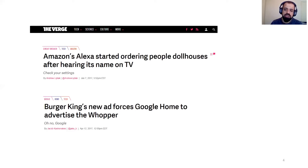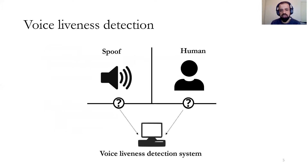Voice liveness detection is a system or AI that detects whether the voice received is from a live human or from a loudspeaker. It also resembles the Turing test proposed by Alan Turing in 1950.